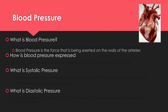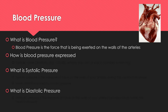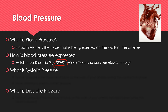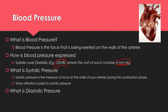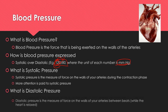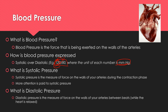Blood pressure — what is it? Blood pressure is defined as the force being exerted on the walls of the arteries. It's expressed as a fraction: systolic over diastolic, for example 120 over 80, where each number is in millimeters of mercury. Systolic pressure is the force on artery walls during the heart's contraction phase — the top number. We generally pay more attention to systolic than diastolic because it causes more problems. Diastolic is the force between beats.